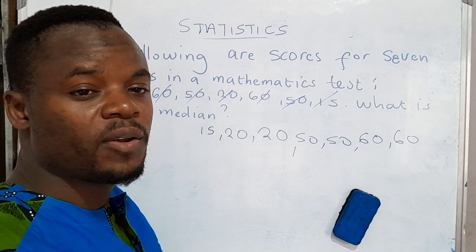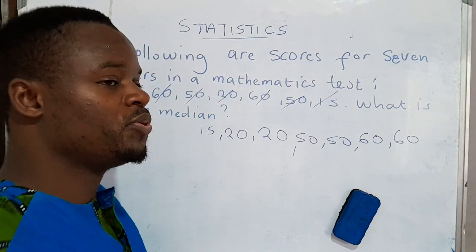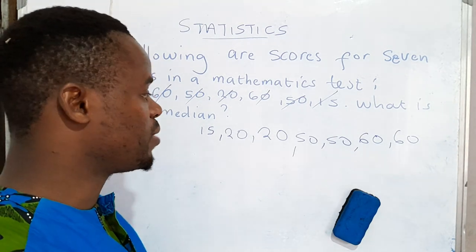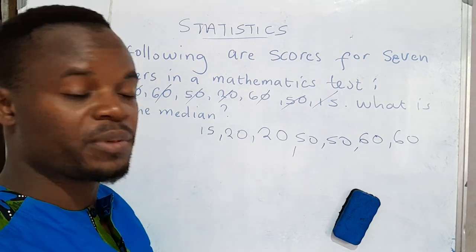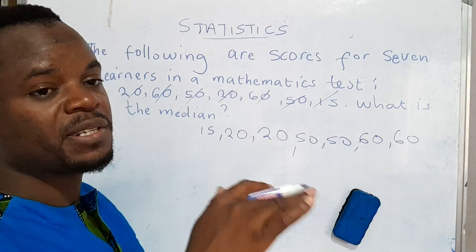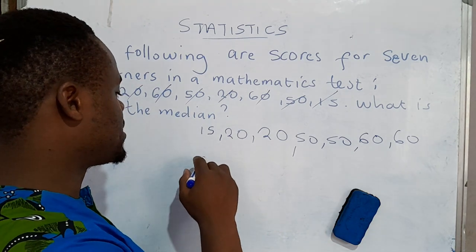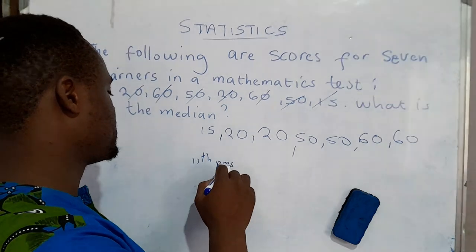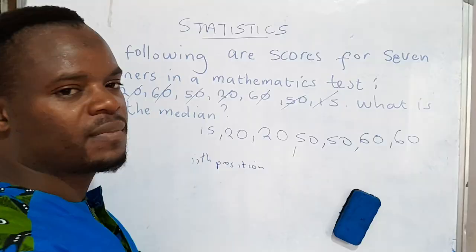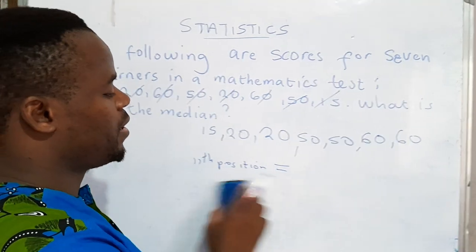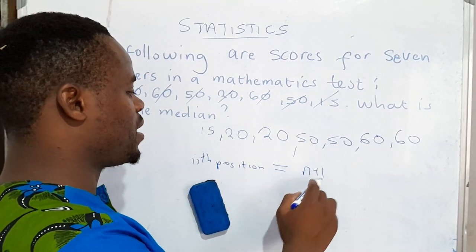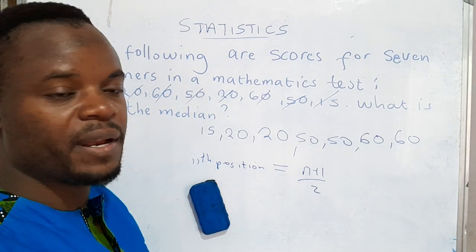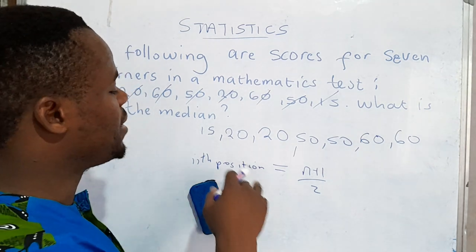Now after you've done that, what you need to do is determine the position of the number which is in the middle. To determine that, we use the formula: the position is equal to N plus 1 divided by 2. N denotes the number of terms that you've been given, so you have to count them.